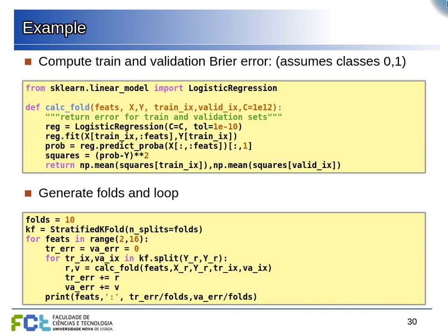We then loop: for each number of features from 2 to 15, initialize training and validation error to zero, loop over each fold, accumulate the training and validation errors, then average them. This gives us the 10-fold cross-validation error for each number of features (model complexity), allowing us to select the best model.